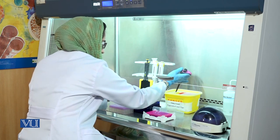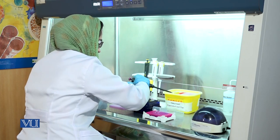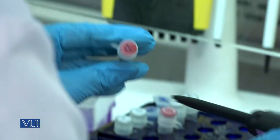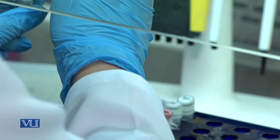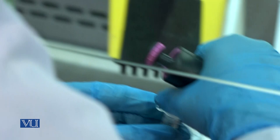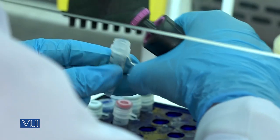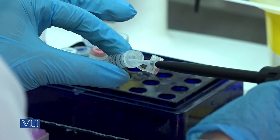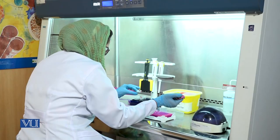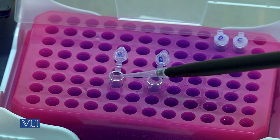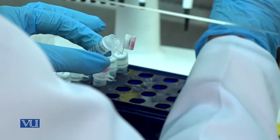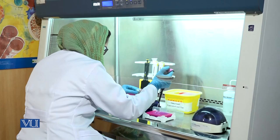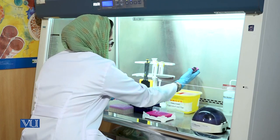Discard the used tip in the waste box. Take 1 microliter of reverse transcriptase and add it in the PCR tube. Reverse transcriptase, also known as RNA-dependent DNA polymerase, is a DNA polymerase enzyme that synthesizes DNA using RNA as a template. Discard the used tip in the waste box.